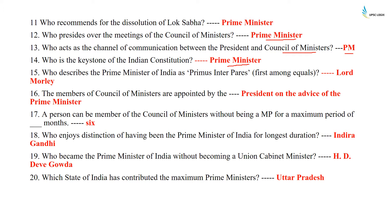The Prime Minister is the keystone of the Indian Constitution. Who described the Prime Minister of India as 'primus inter pares' — first among equals? That was Lord Morley. Members of the Council of Ministers are appointed by the President on the advice of the Prime Minister. A person can be a member of the Council of Ministers without being an MP for a maximum period of six months. Who enjoyed the distinction of being PM for the longest duration? That was Indira Gandhi. Who became Prime Minister without becoming a union cabinet minister? It was H.D. Deve Gowda. Which state has contributed the maximum Prime Ministers? It is Uttar Pradesh.